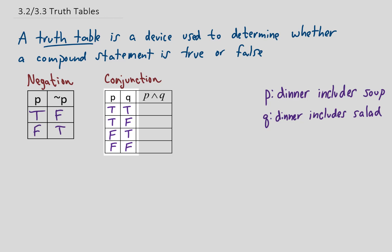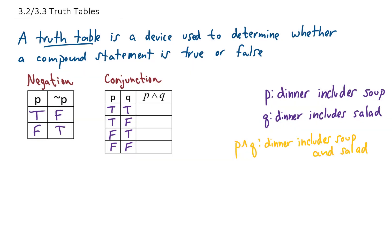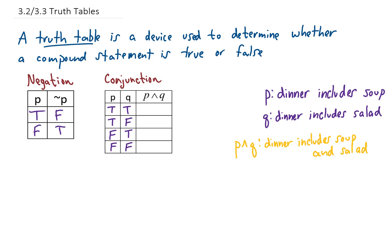In this truth table, we really just care about the conjunction of p and q. The statement 'p and q' would mean that dinner includes soup and salad, and that's what we're analyzing. Let's go row by row. For this first row, we sit down to dinner — because there's a true for p, they bring soup, and because there's a true for q, they bring salad. So the statement 'dinner includes soup and salad' is a true statement.